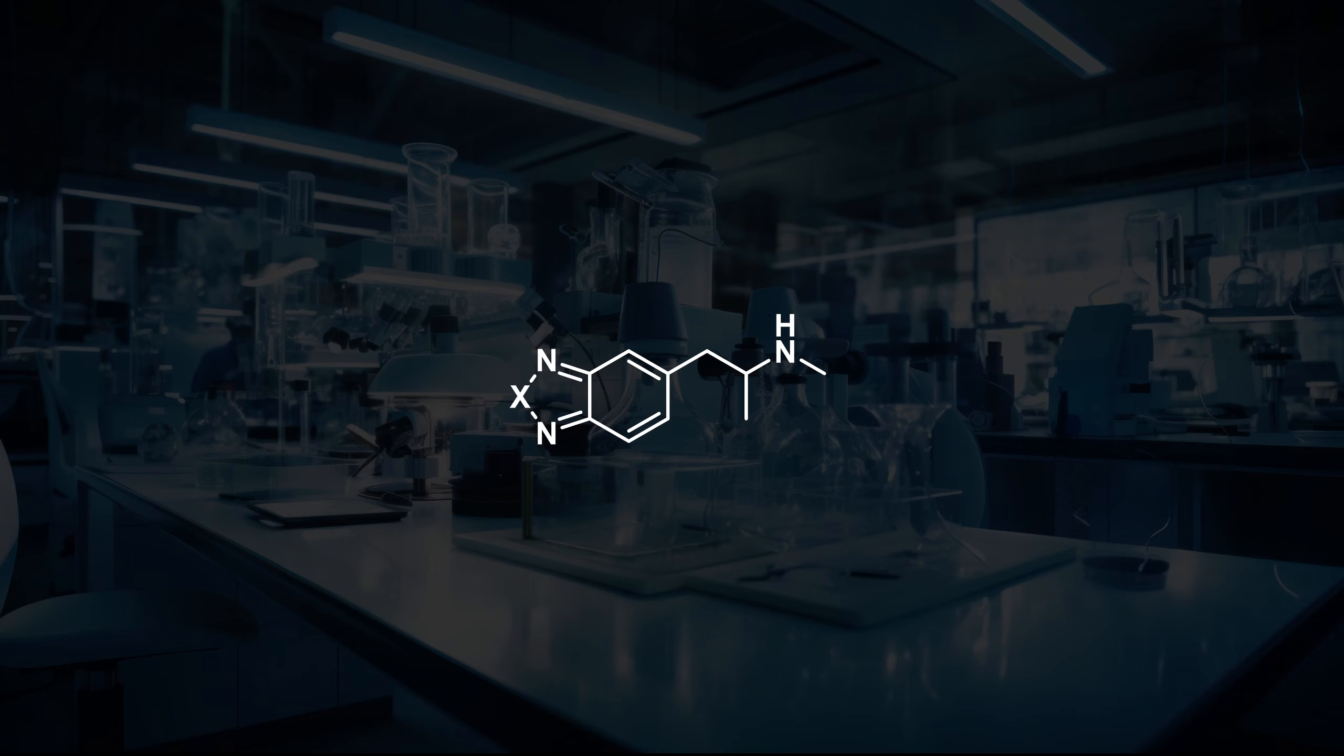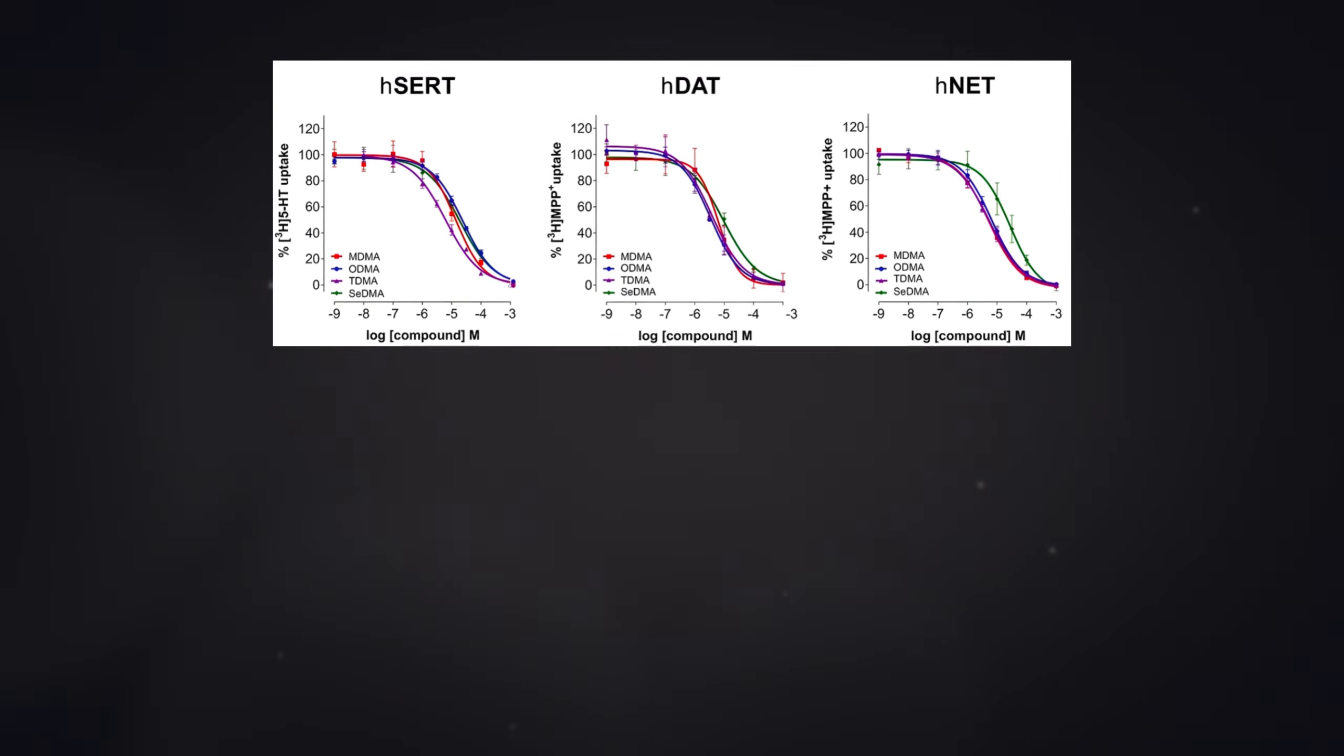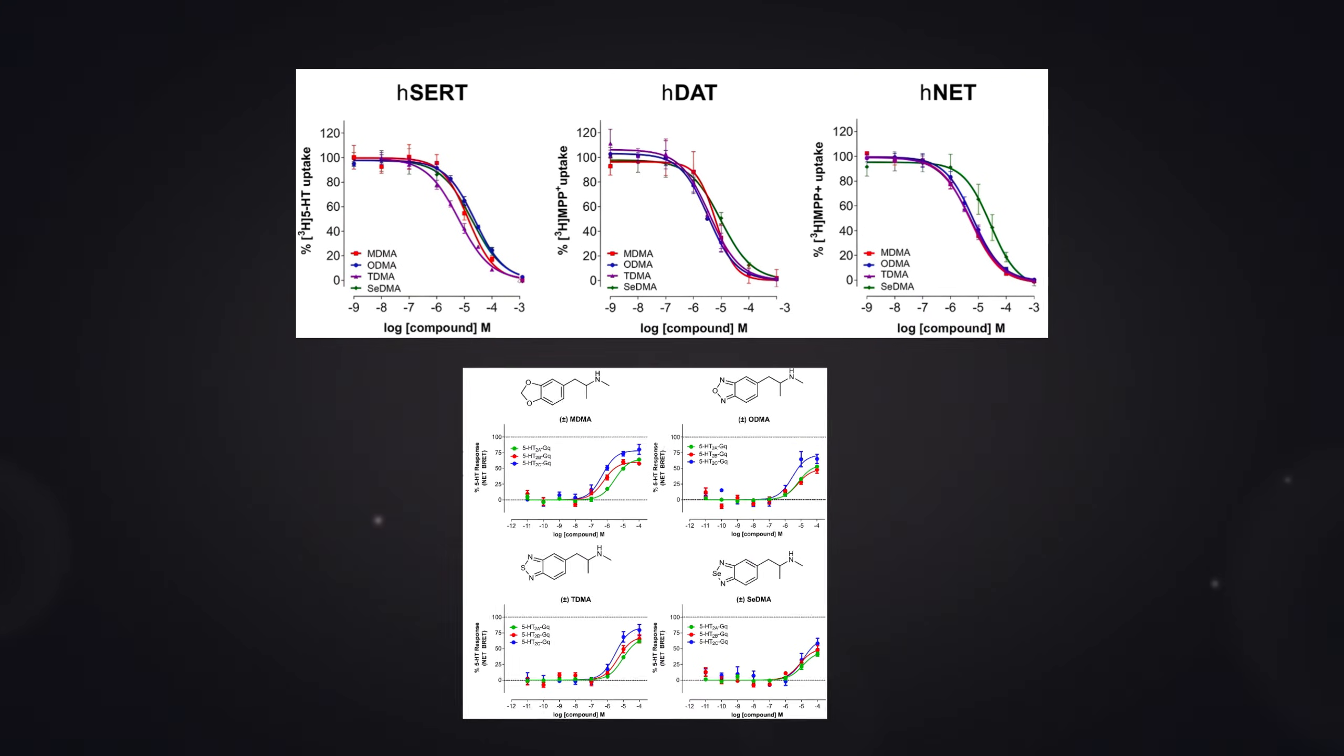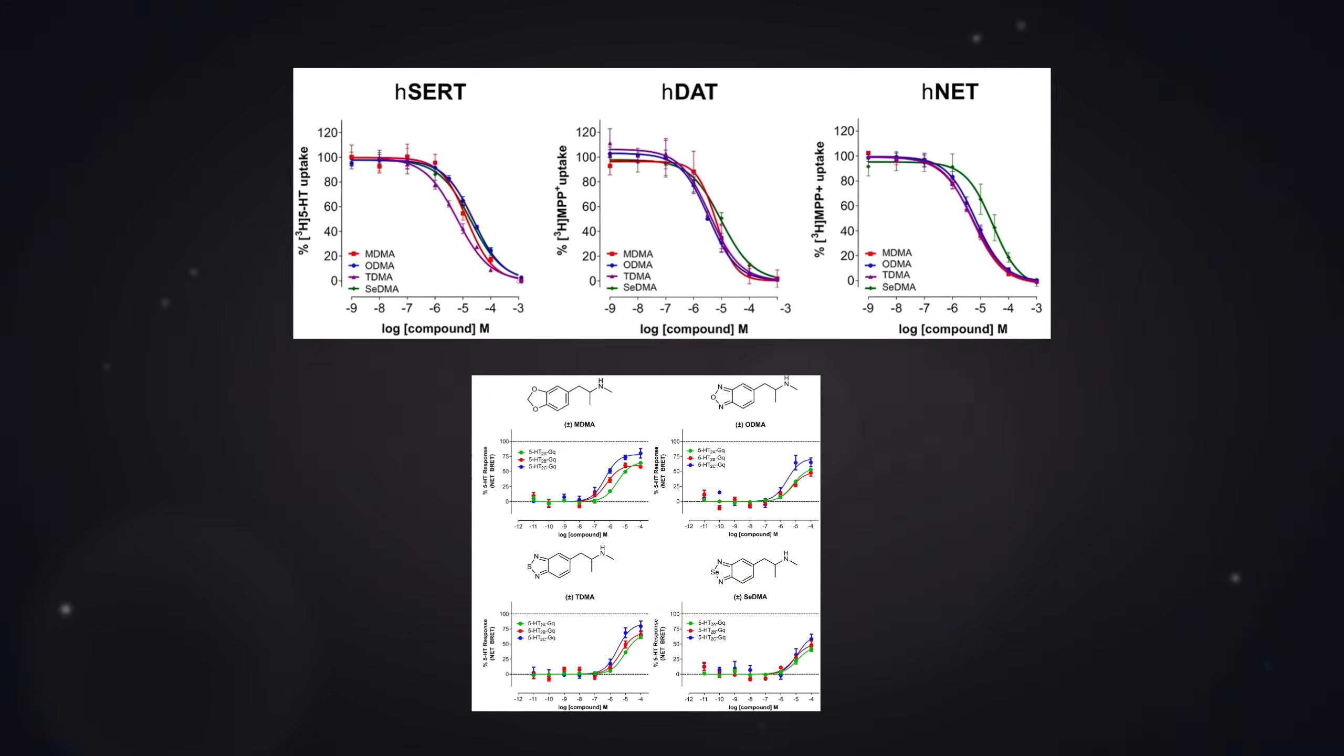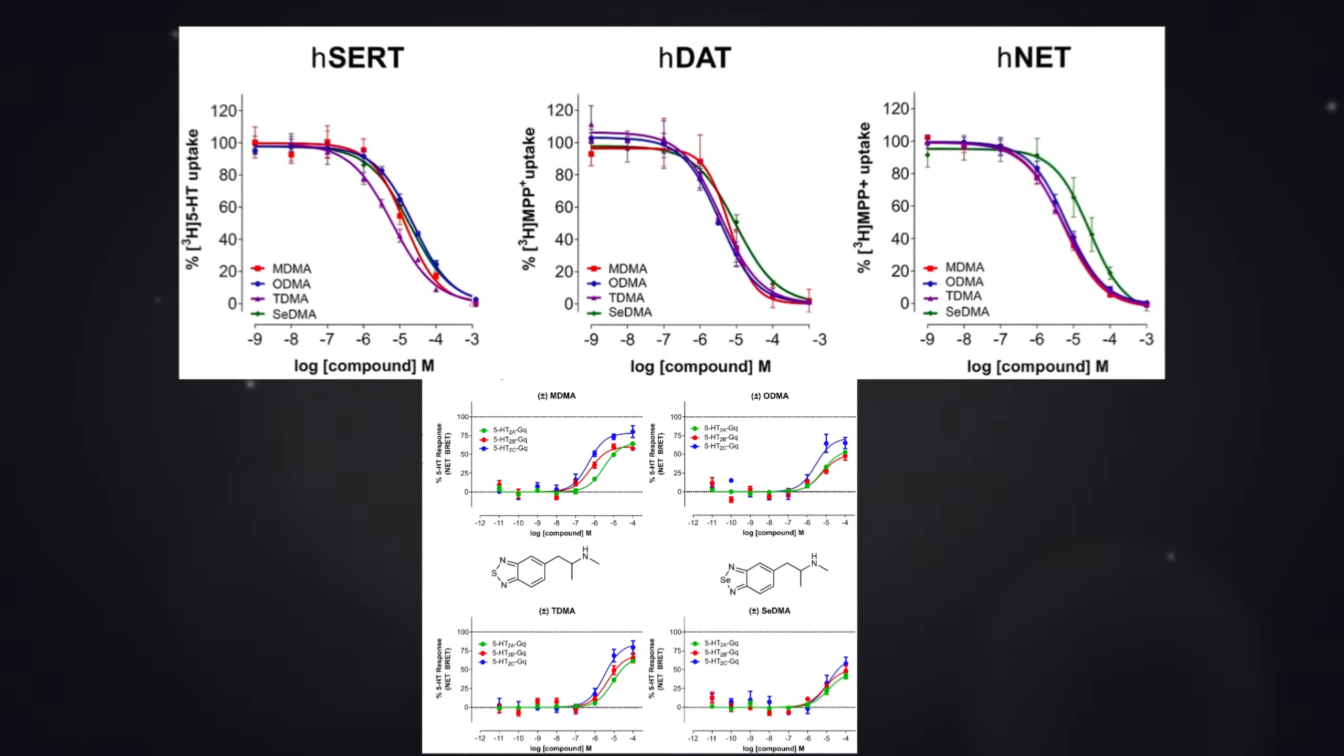This study was the first of its kind to look at novel bioisosteric replacements of the methylene dioxide ring. These bioisosteric replacements appear to have a similar effect to MDMA on the monoamine transporters but a reduced effect at the 5-HT2 receptors. This change, as well as the improved metabolism of these compounds, could reduce the side effects and improve the safety of these molecules compared to MDMA.